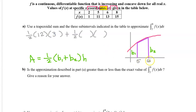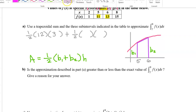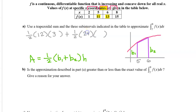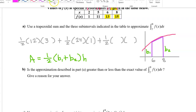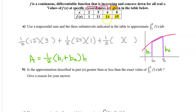Next, consider the interval from 5 to 6. Base 1 is the value of the function at 5, which is 11, and base 2 is the value at 6, which is 13. So base 1 plus base 2 is 24, and the width is 1. Now, for the interval from 6 to 8: base 1 is 13 and base 2 is 15, so base 1 plus base 2 is 28, and the width is 2.